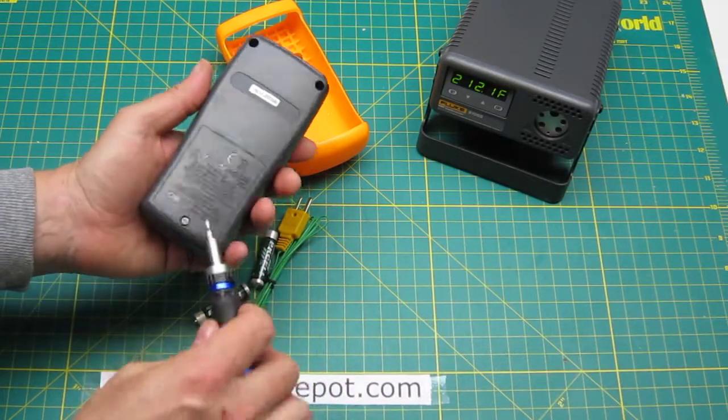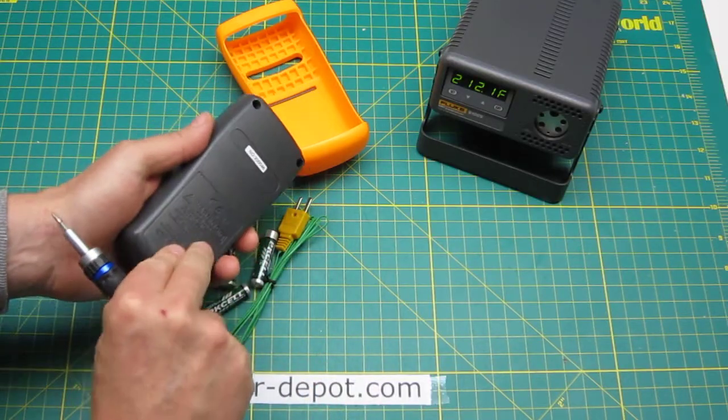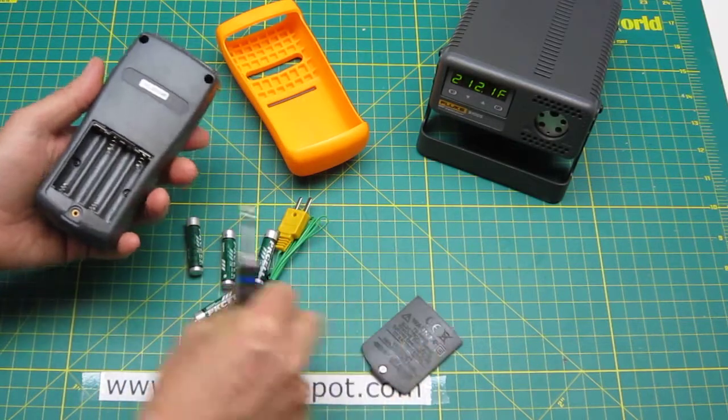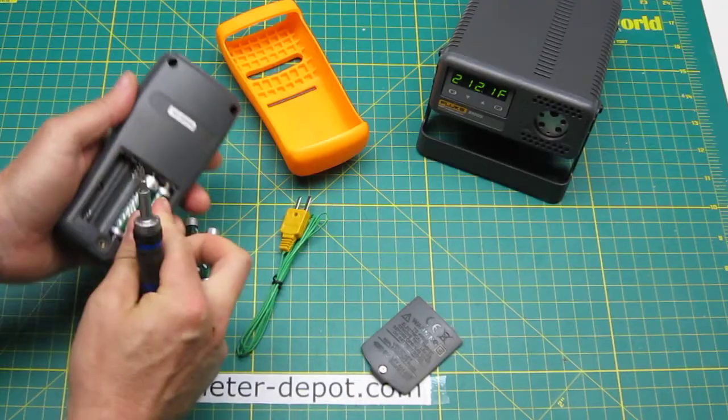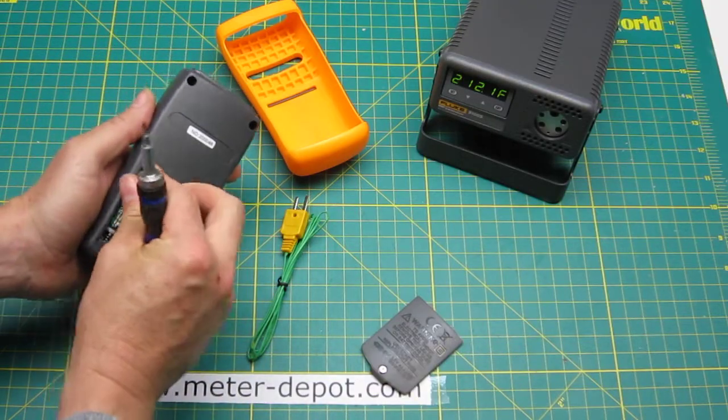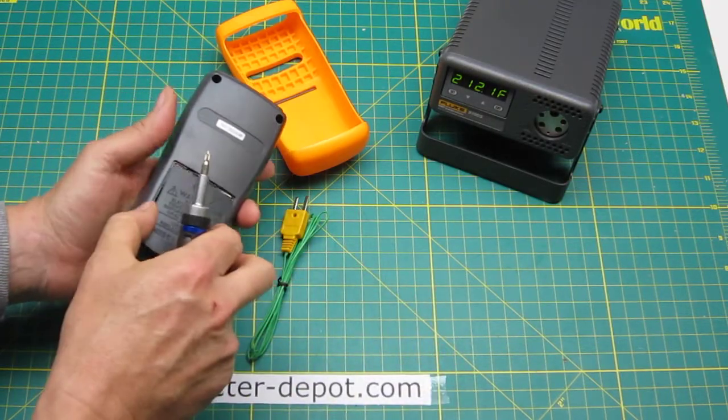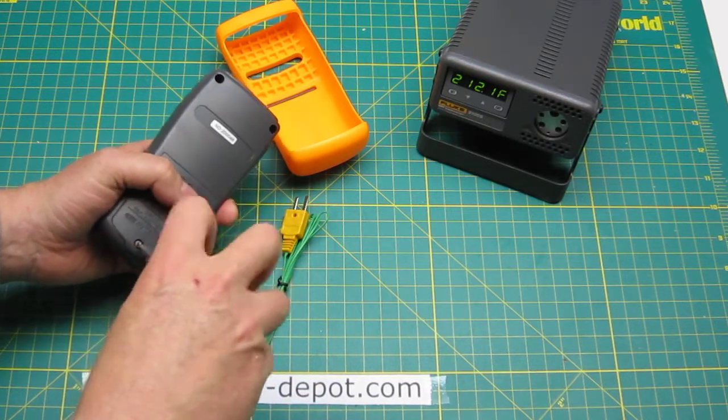What you need next is a little screwdriver to open the battery compartment and then simply insert the batteries. The meter should make a little beeping noise. There it is and we are all set with the batteries inserted.